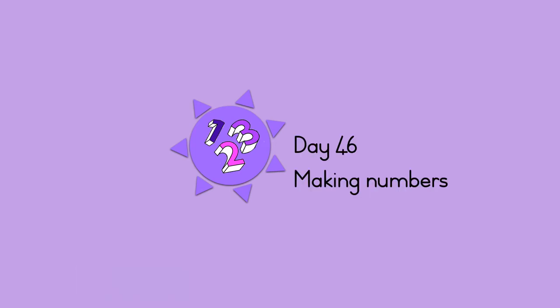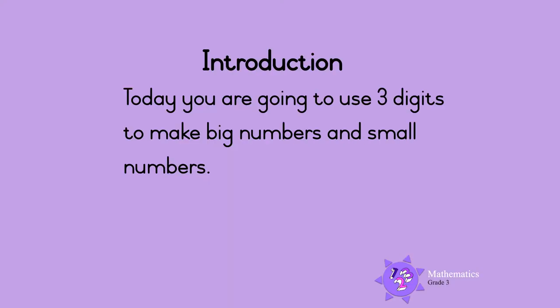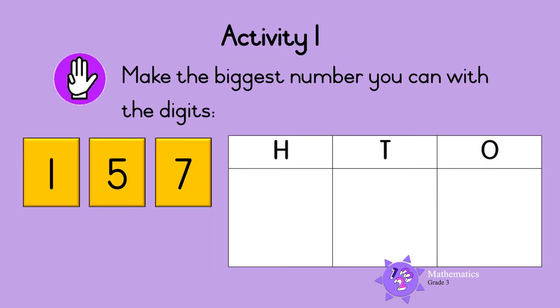Hello everyone, today you are going to make big numbers and small numbers. Activity one: make the biggest number you can with the digits. The numbers one, five, and seven are all called digits.